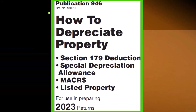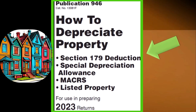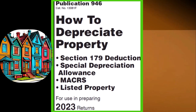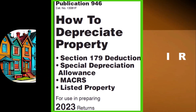Most of this information can be found in Publication 946: How to Depreciate Property — covering the Section 179 Deduction, Special Depreciation Allowance, Listed Property, and more for Tax Year 2023, which you can find on the IRS website at irs.gov.